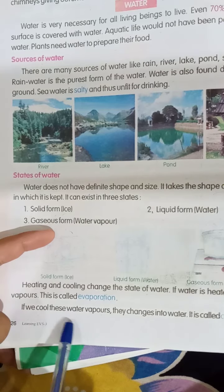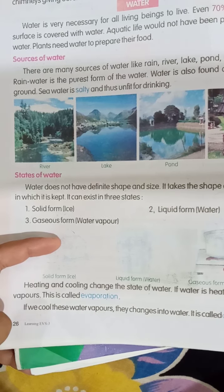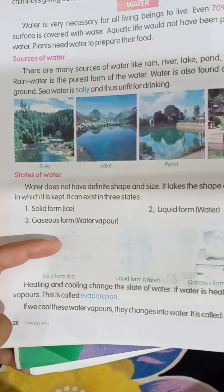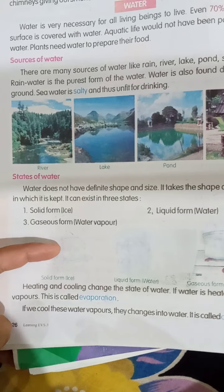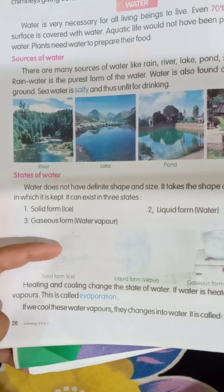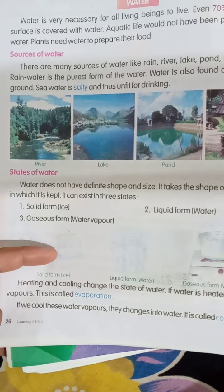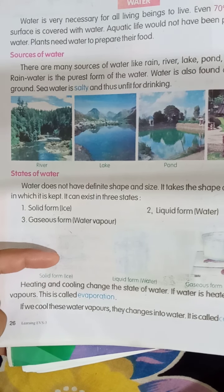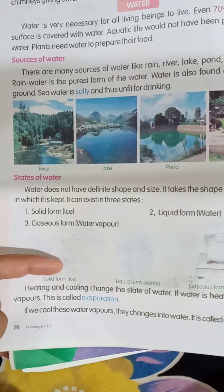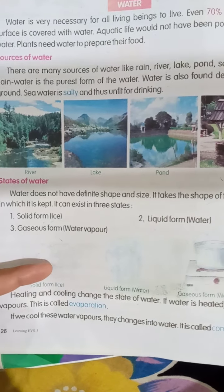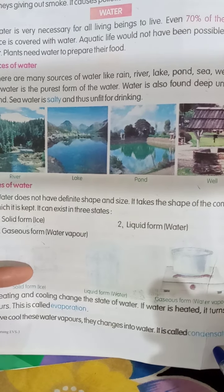If we cool these water vapours, they change back into water. Take a container, put it on a gas stove with water. When you turn on the gas, it will start producing vapour. Put a lid on it and then turn off the gas. The vapour collected on the lid will become water. This process is called condensation.